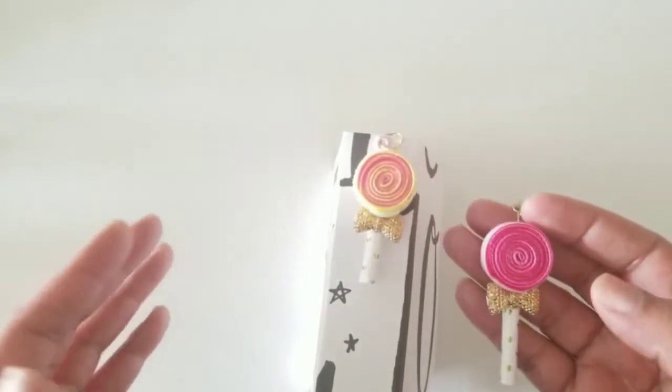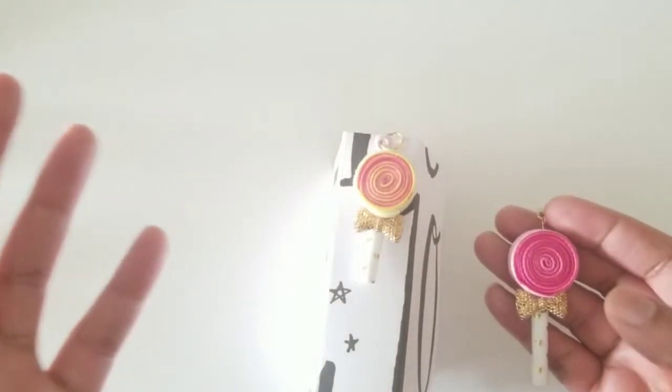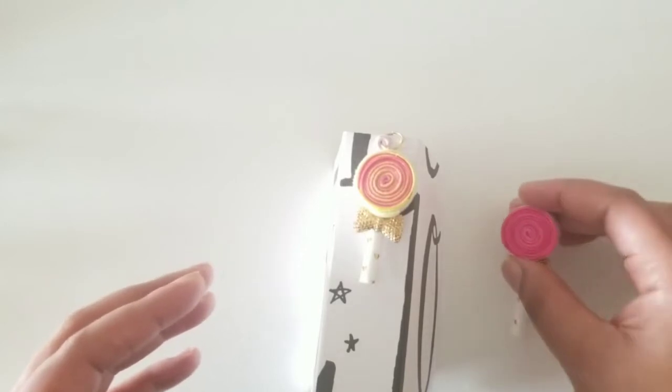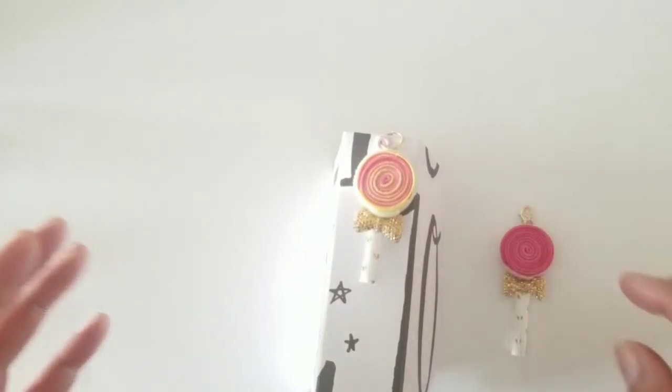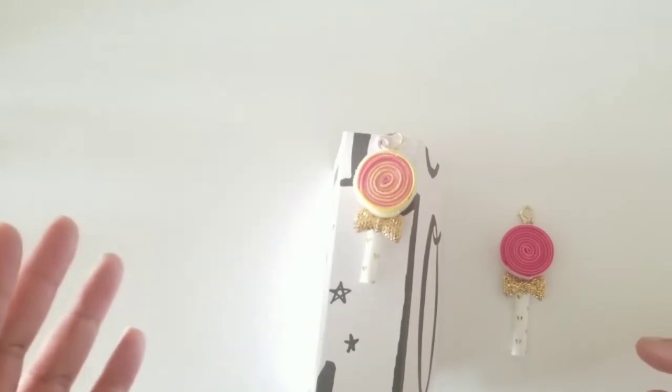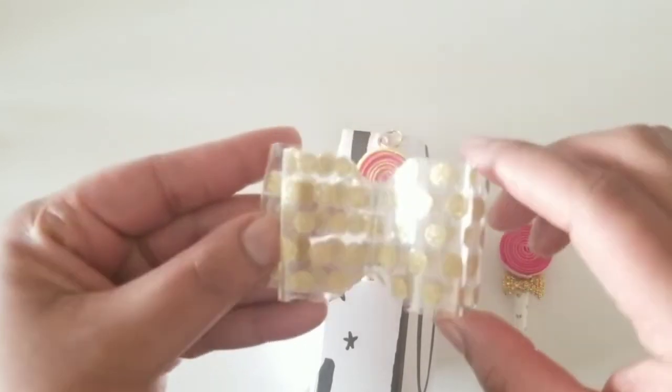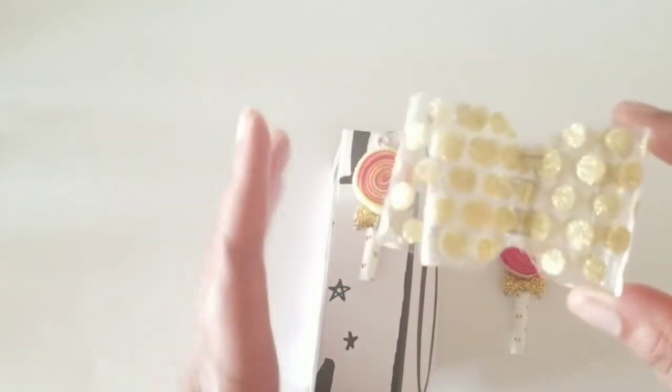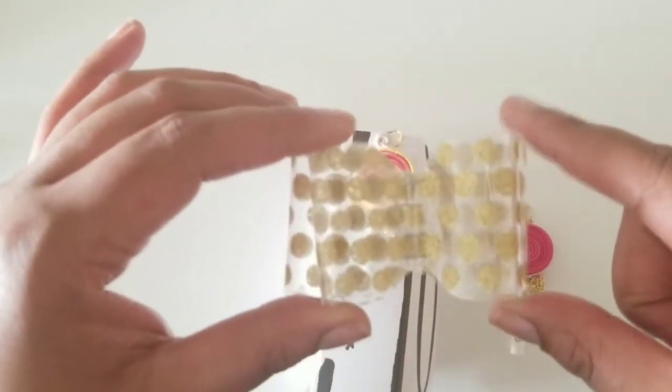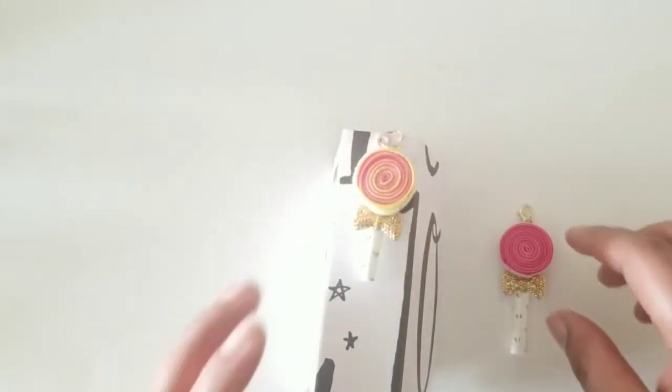You could also use the charm - you don't have to turn it into a charm. You could use it in the middle of a cluster or if you wanted to use it as a centerpiece. I am actually today going to create the lollipop that I'm going to use in the center of this bow. This is an acetate bow that I made and I'm going to create the lollipop to sit in the center of that.